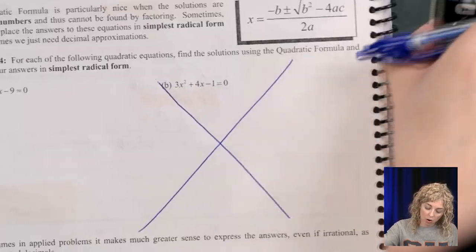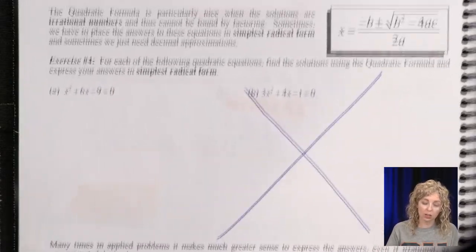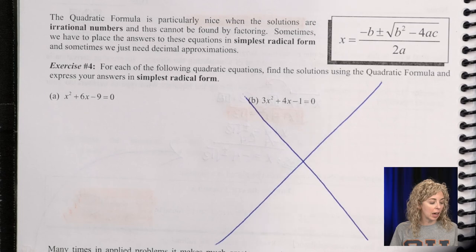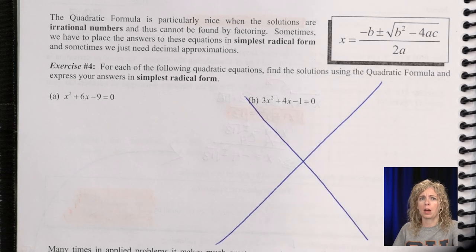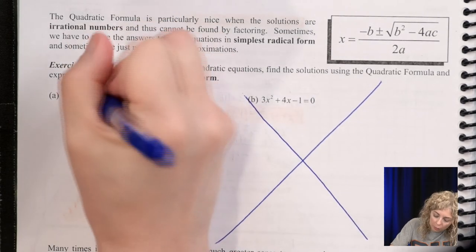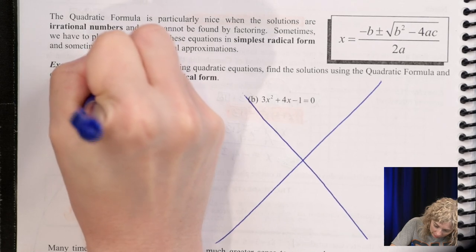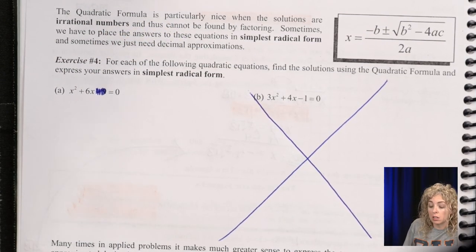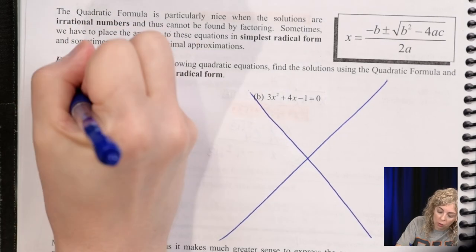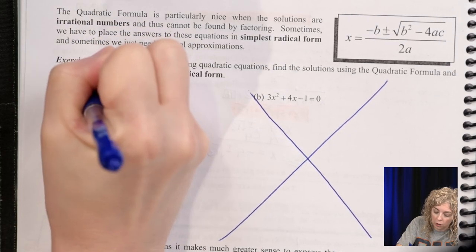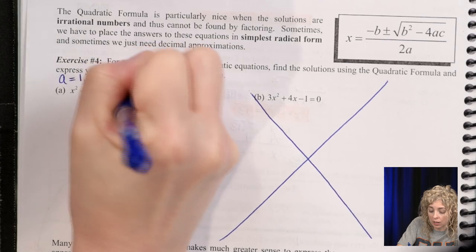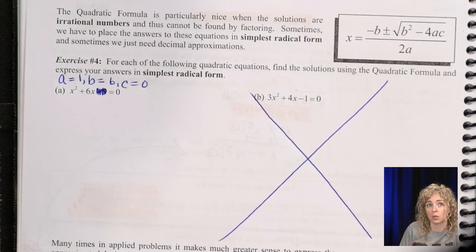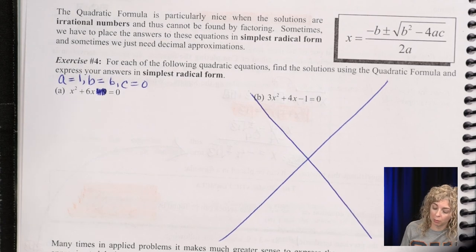Alright, so I'm going to modify this one a bit. Okay, let's actually, so I don't know how this is going to come out, but let's get rid of that 9. So there's actually no c term here. Okay, so we'll have a is 1, b is 6, and c is 0. Okay, so there's no c written, so that means it must be a 0.